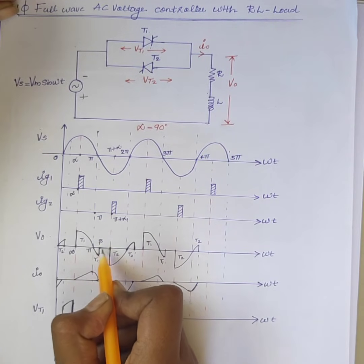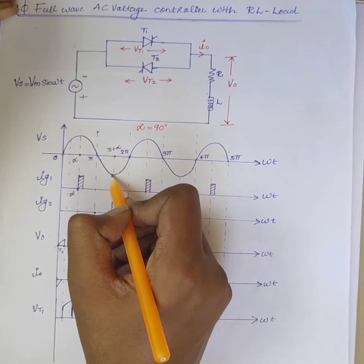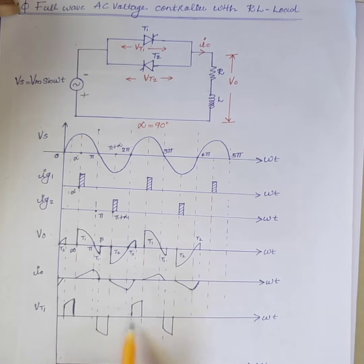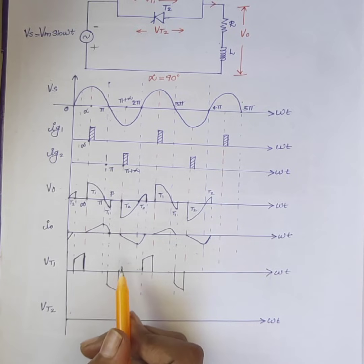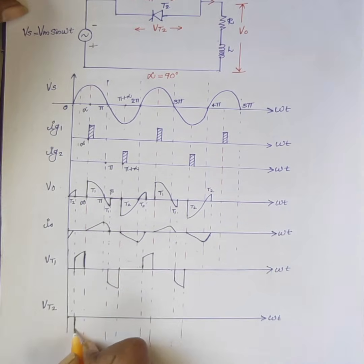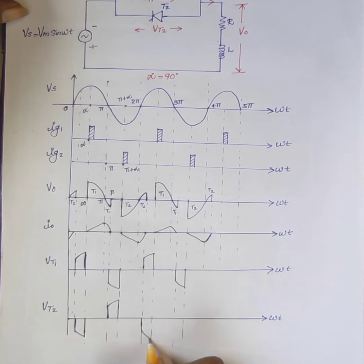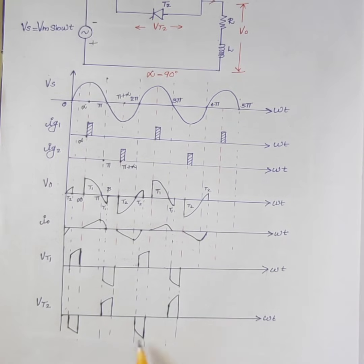From beta to π plus alpha, both SCRs are in the off state, so this voltage appears across switch T1. This is the complete voltage waveform across switch T1. We know that VT2 is equal to minus VT1 because both are connected in anti-parallel. So this is the voltage across T2, and VT1 is equal to minus VT2. Thank you.